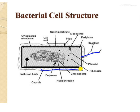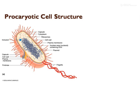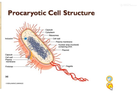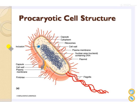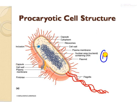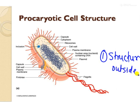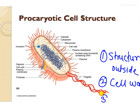If we study the bacterial cell properly, we can say that the structure of bacteria is divided into three parts: first, the structures which are present outside the cell wall; second, the cell wall itself; and third, the structures which are present inside the cell.